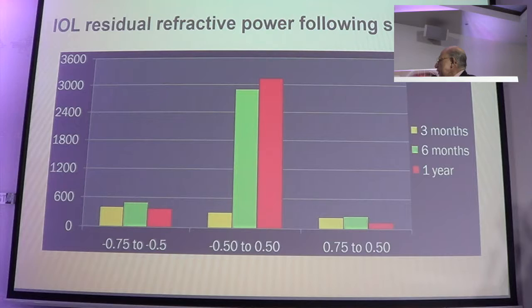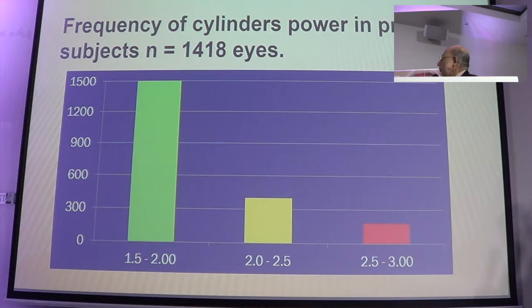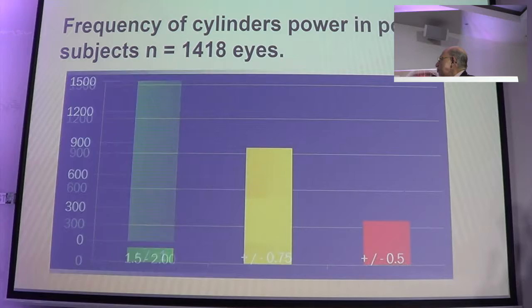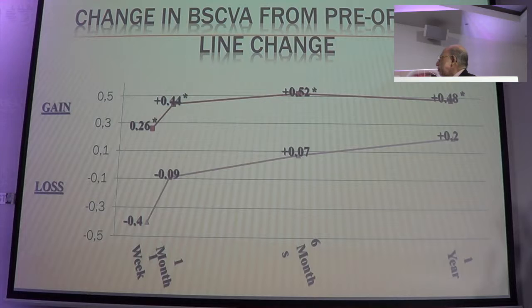Only since the last three or four months have we started using the average PK formula, and hopefully over time others will be still better. As you know, there are three diopters of cylinder in 1,400 cases — almost 30% of them have cylinders. So the use of toric correcting cylinders is important, and of course the change in this kind of condition is there.